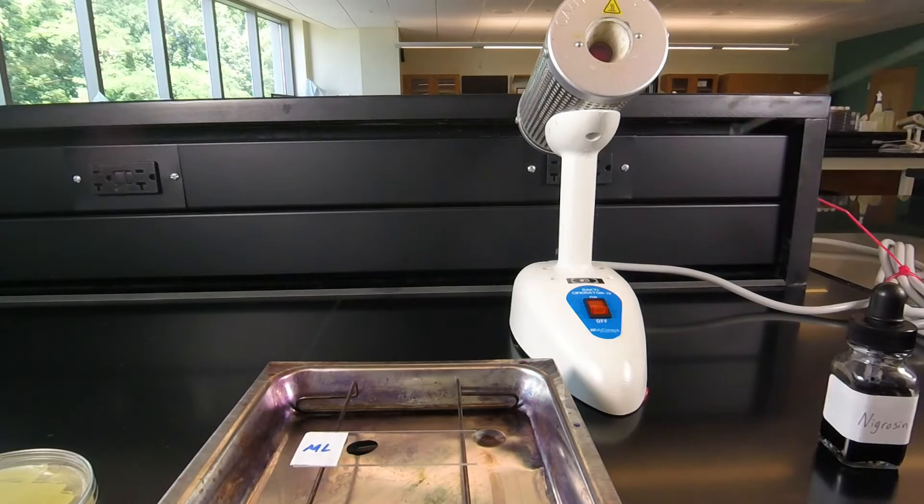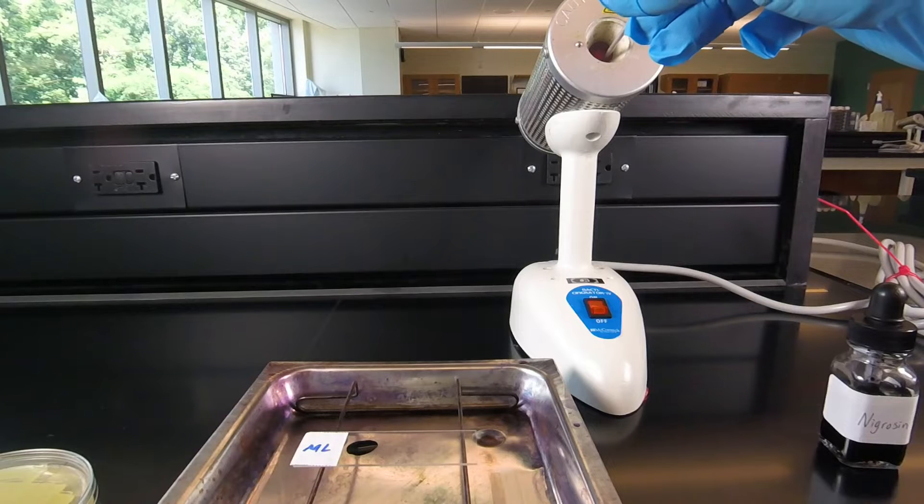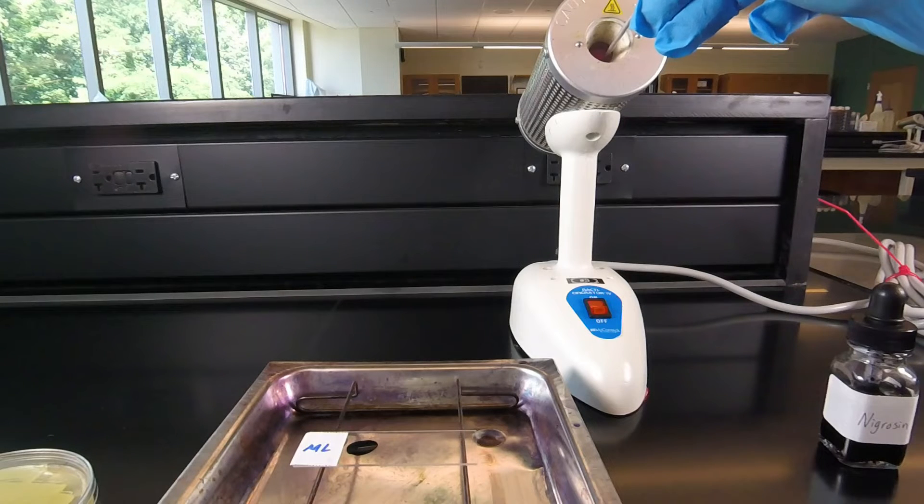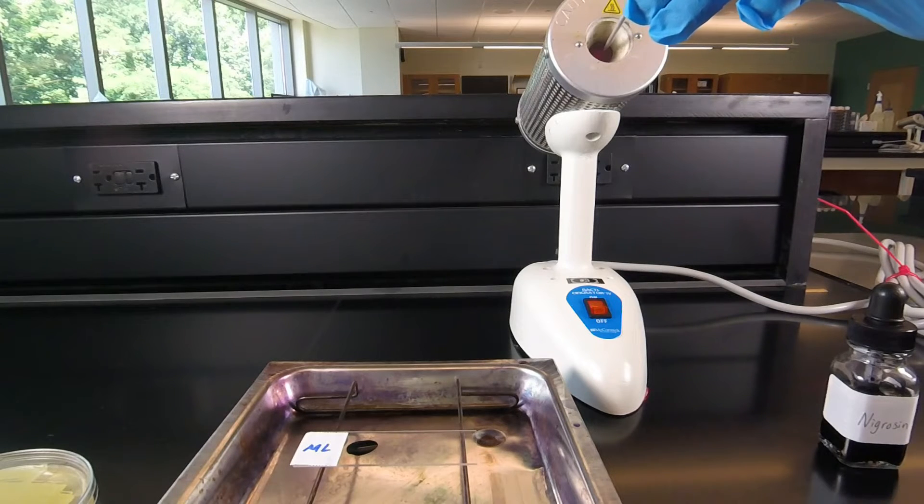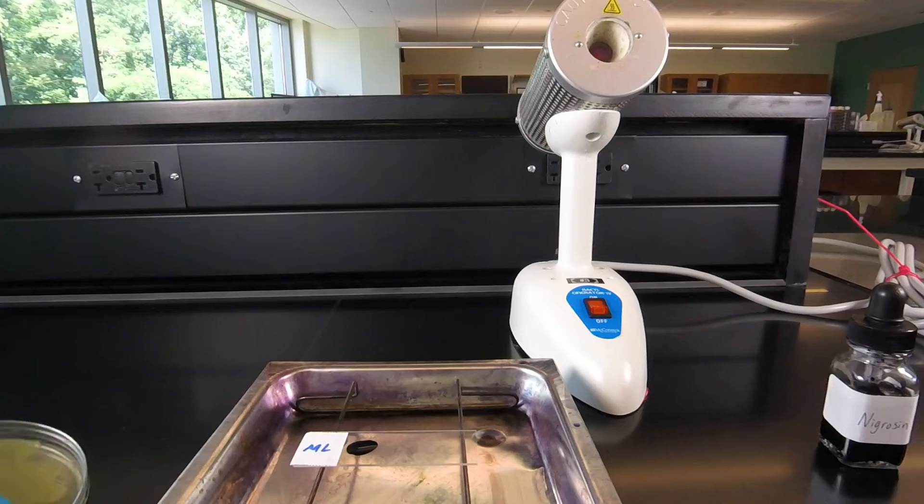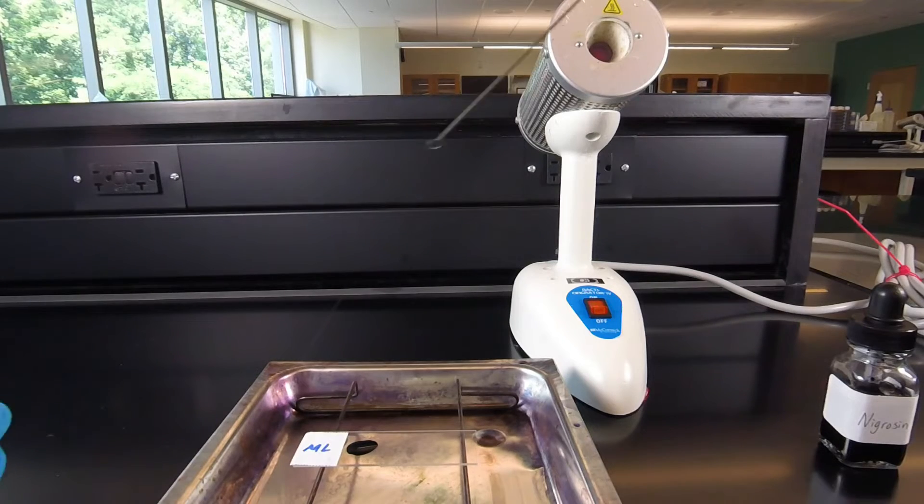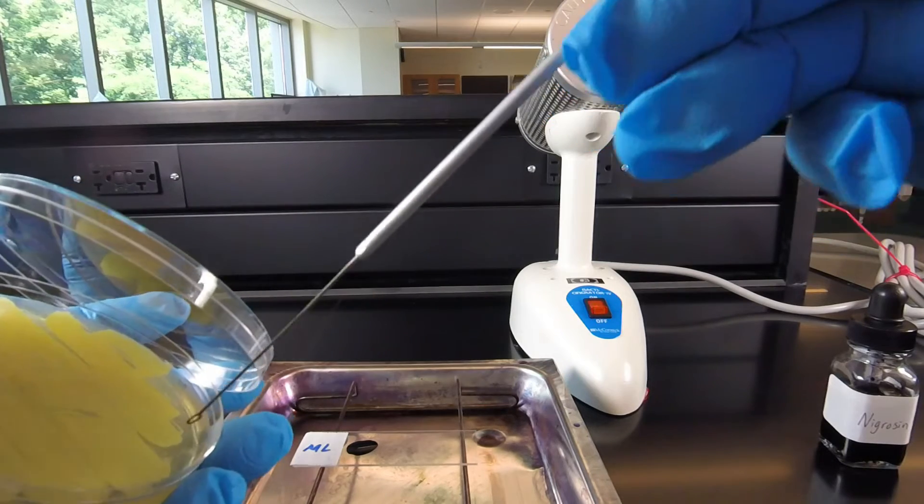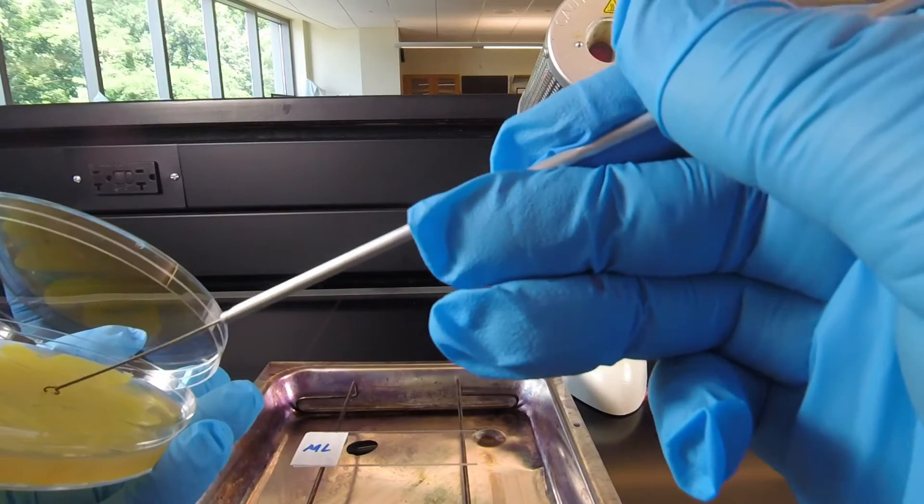Then we're going to add our bacteria to the dye. So we sterilize our inoculating loop, then stick the inoculating loop in the agar to cool, and we're going to scrape off some bacteria.